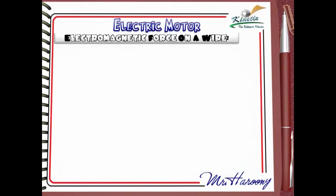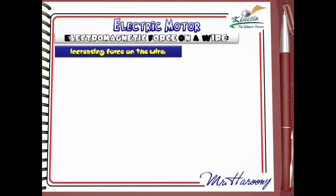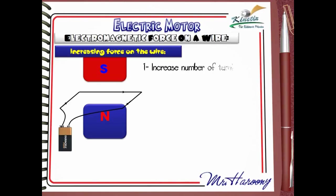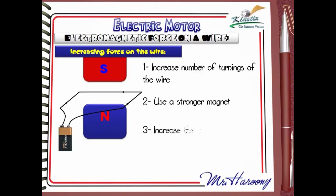We can also ask: can we cause a stronger pushing force on the wire? Yes — number one, increase the number of turns of the wire; number two, use a stronger magnet; number three, increase the current intensity; number four, bring the poles closer together.